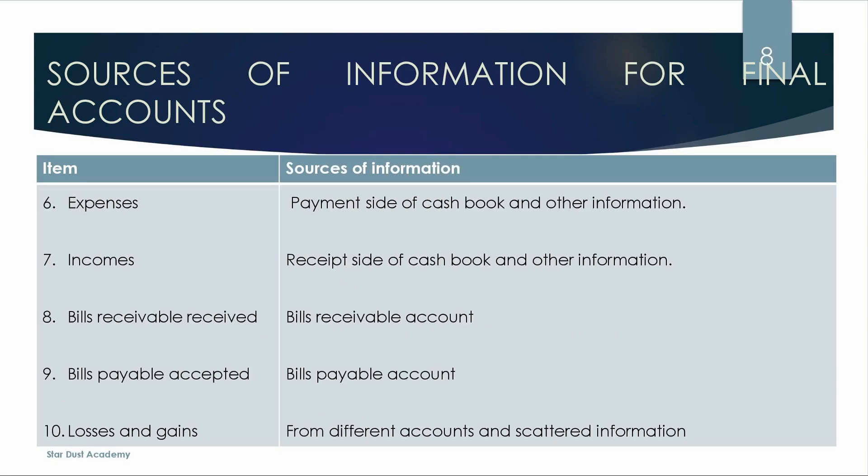Next is expenses — we have expenses from payments on cash book. Income — bills receivable account. Bills Receivable received is an item that we have received. If a bill receivable is prepared, we will go to bills receivable account. A bill receivable is accepted; from different accounts and scattered information we will go out to the bills receivable.